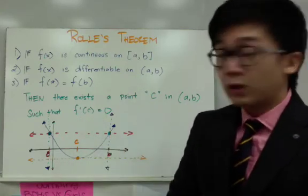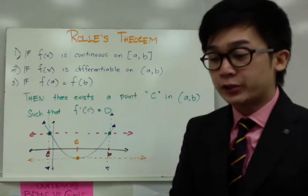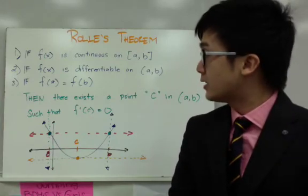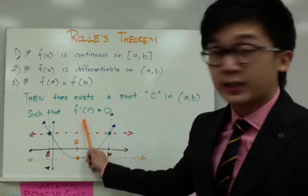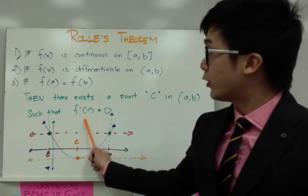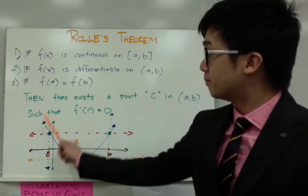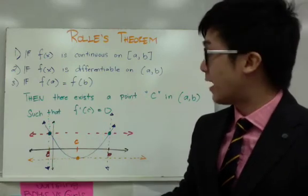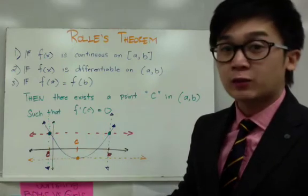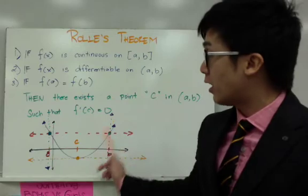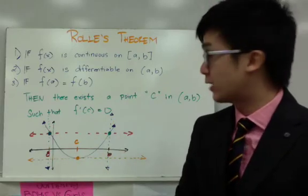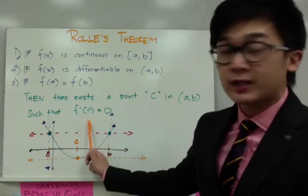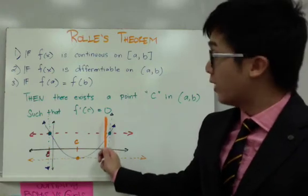Rolle's Theorem is quite similar to the Mean Value Theorem, but the key thing we need to consider is finding this point c in your function. From the Mean Value Theorem, f prime of c is equal to the slope of the secant line connecting a and b, and in this case, our f prime of c will be equated to 0.